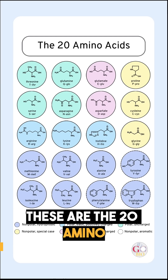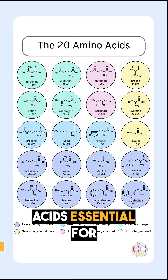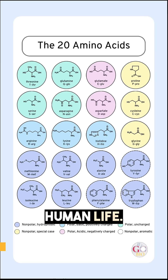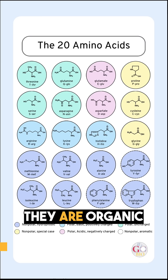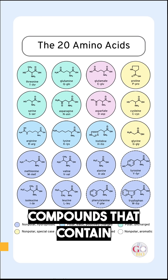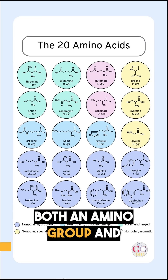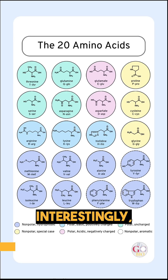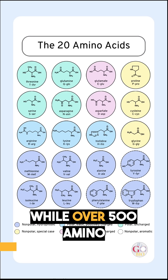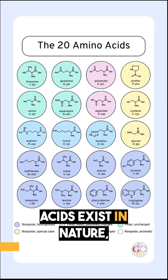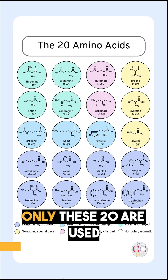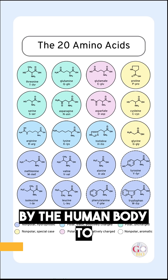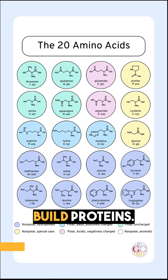These are the 20 amino acids essential for human life. They are organic compounds that contain both an amino group and a carboxylic acid group. Interestingly, while over 500 amino acids exist in nature, only these 20 are used by the human body to build proteins.